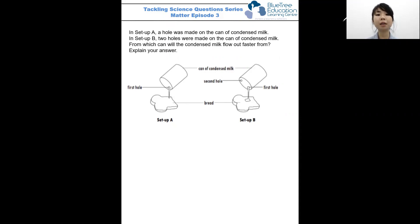In setup A, a hole was made on the can of condensed milk, while in setup B, two holes were made on the same can of condensed milk. From which can will the condensed milk flow out faster? And explain accordingly.